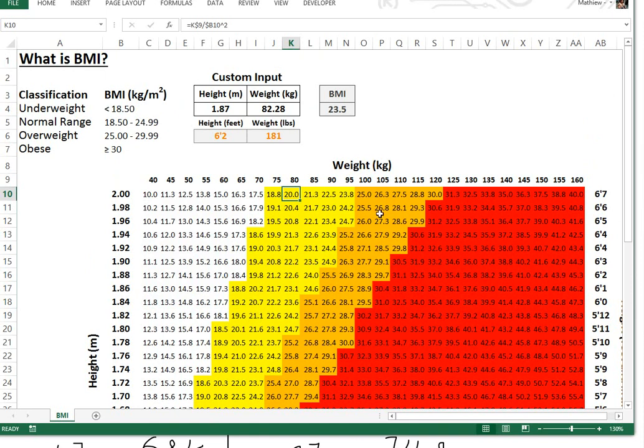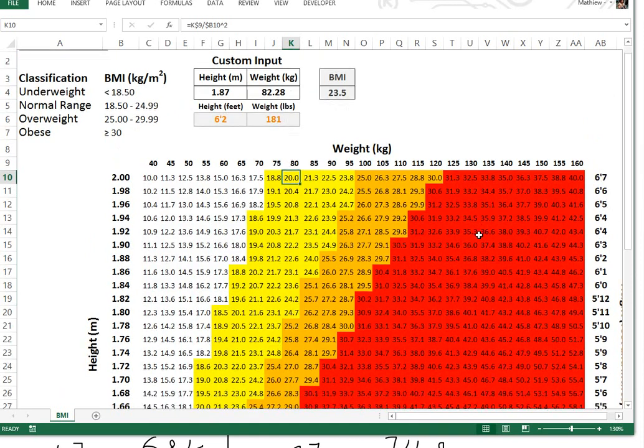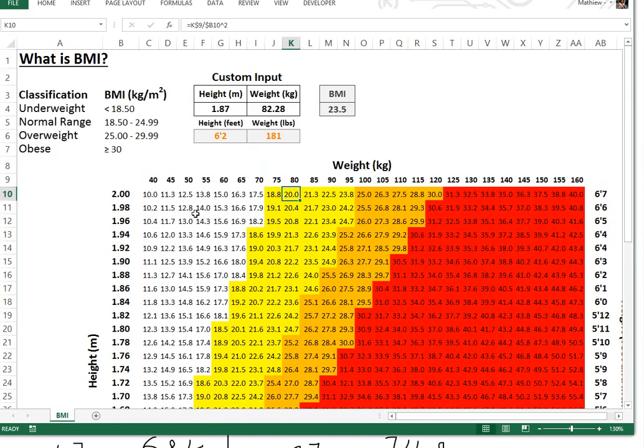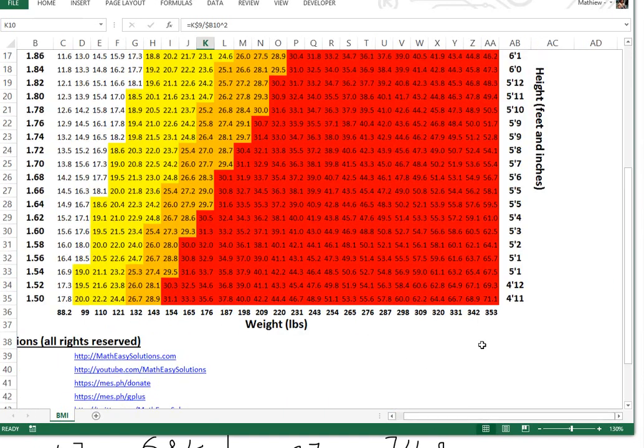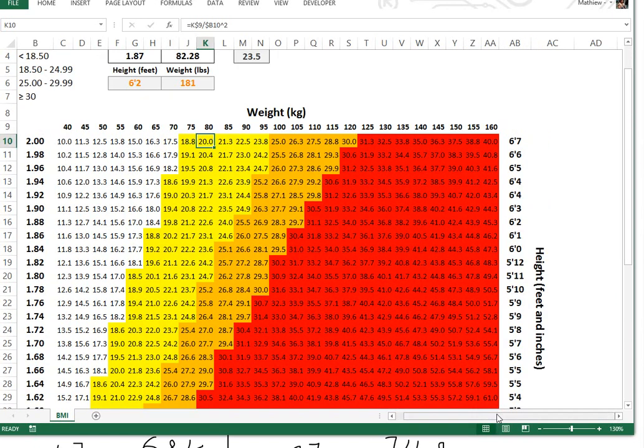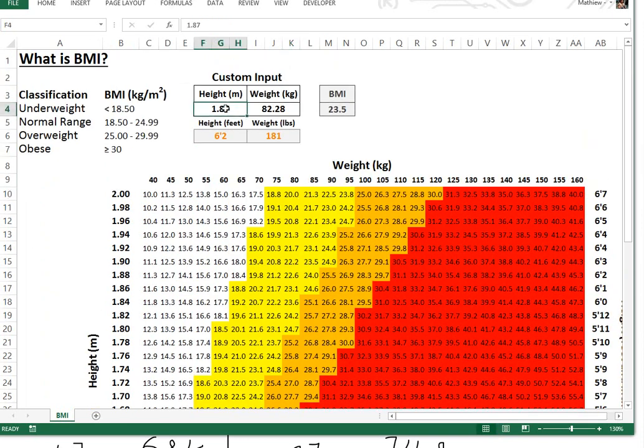This is underweight. This is normal range of yellow. And then here is the overweight and that's obese. That's a height in meters, weight in kilograms.